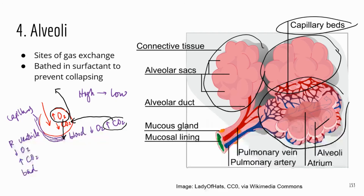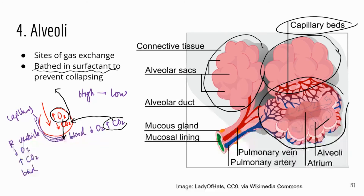The alveoli are coated in surfactant, which is a mixture of lipids and fats. The function of surfactant is to prevent the air sacs from collapsing when you exhale, because collapsing alveoli would present serious problems.